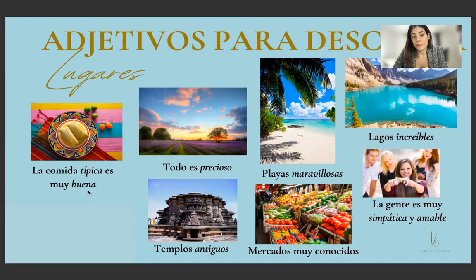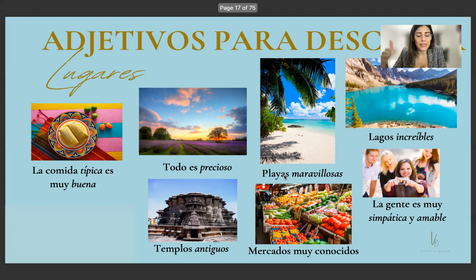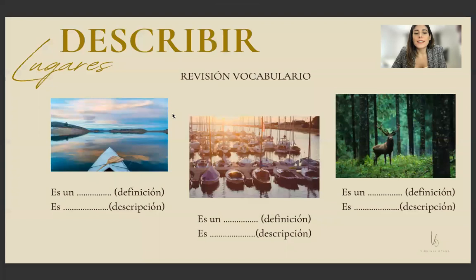Acá tenemos adjetivos para describir. When you describe you need adjectives: la comida típica es muy buena; todo es precioso; templos antiguos; playas maravillosas; mercados muy conocidos, muy populares; lagos increíbles. La gente es muy simpática y amable — these are for people. Don't say the food is amable — try to use the right adjectives in context. Repeat and practice adjectives.